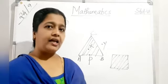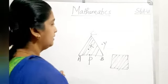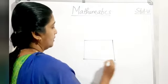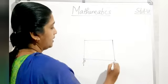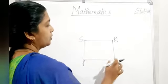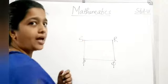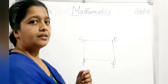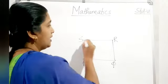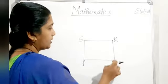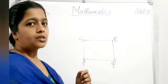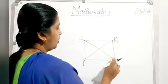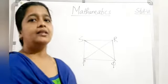What is a diagonal? For quadrilateral PQRS: PQ, QR, RS, and SP are the sides. Angles P, Q, R, and S are the angles. SR and PQ are opposite sides; RQ and SP are opposite sides. The diagonals are PR and QS.